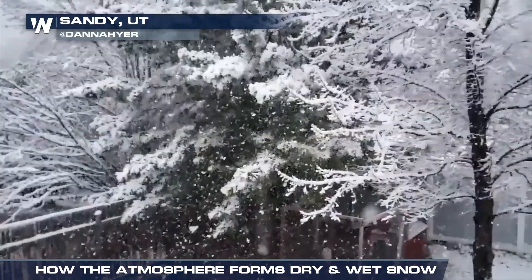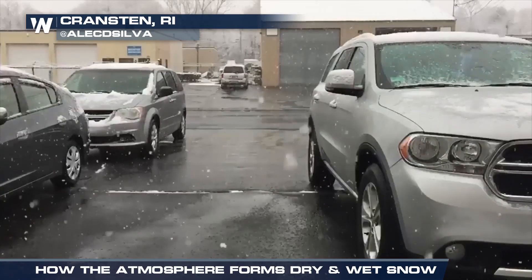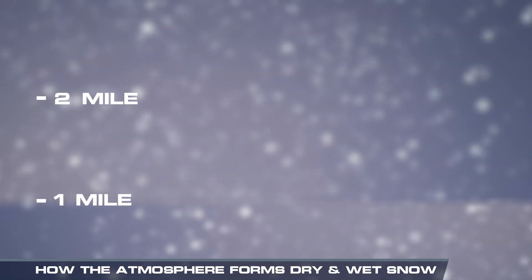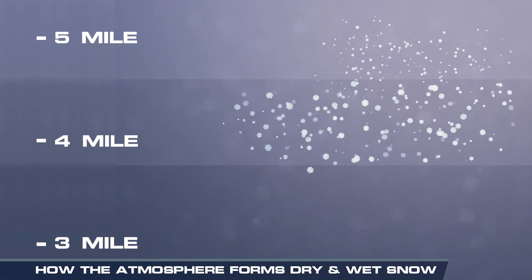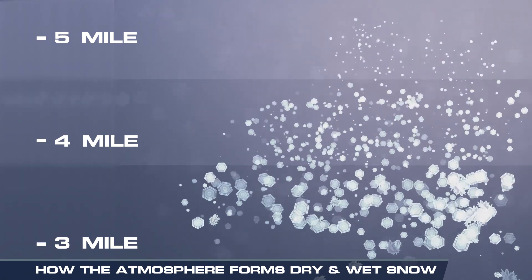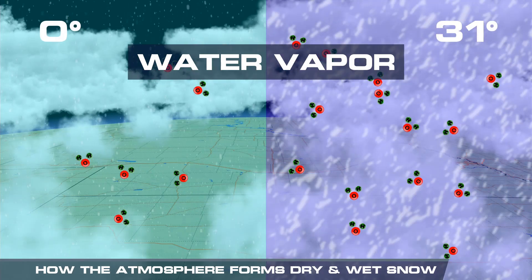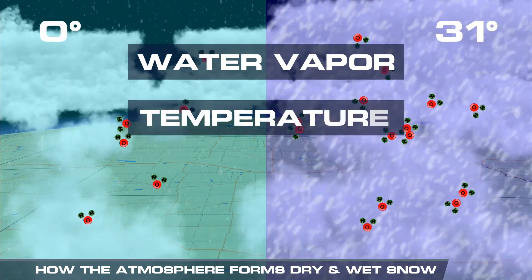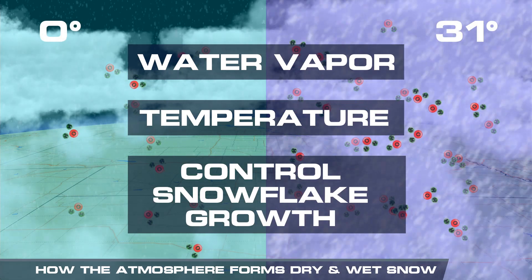The weight of snow is determined by how much liquid is packed into each flake. This process occurs in higher, colder parts of the atmosphere where ice crystals grow, forming snowflakes. The amount of water vapor in the atmosphere, or water in its gas form, along with the temperature, control the total liquid each flake contains.